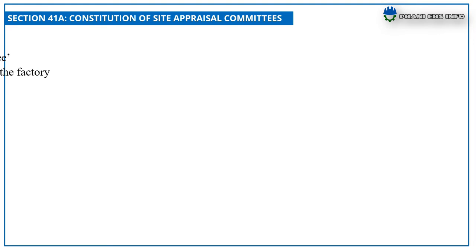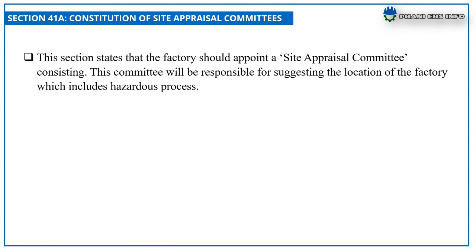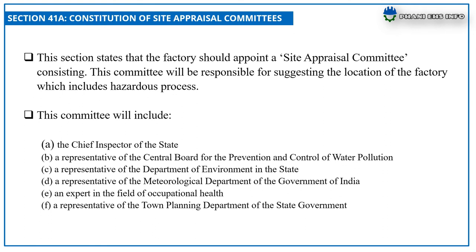Section 41A: Constitution of Site Appraisal Committees. This section states that a factory should appoint a site appraisal committee, which will be responsible for suggesting the location of the factory involving hazardous processes. This committee will include the Chief Inspector of the state, a representative of the Central Board for the Prevention and Control of Water Pollution, a representative of the Department of Environment in the state, a representative of the Meteorological Department of the Government of India, an expert in the field of occupational health, and a representative of the Town Planning Department of the state government.